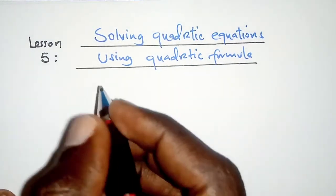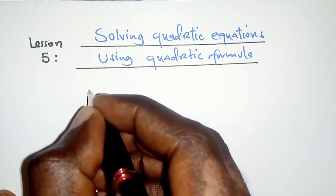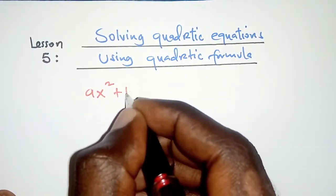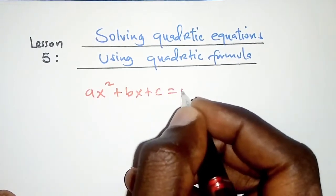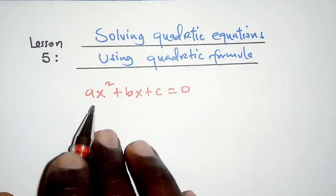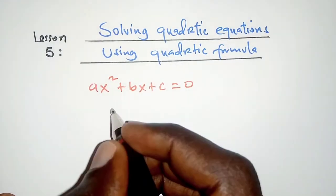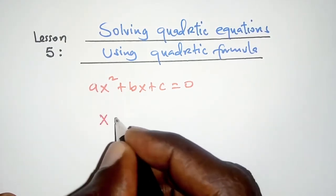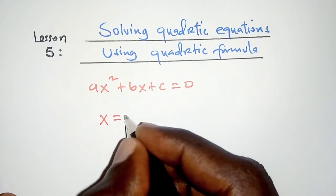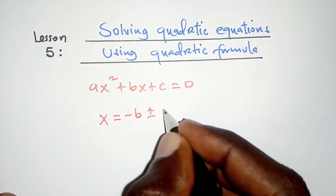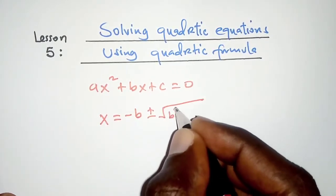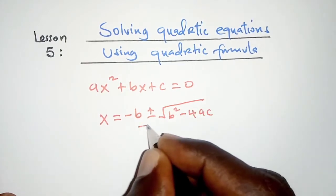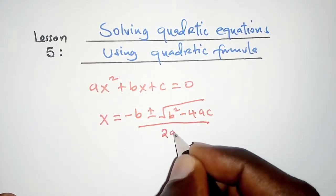First of all, given a quadratic equation ax squared plus bx plus c is equal to zero, we can solve this straight away by substituting in the quadratic formula which states x is equal to negative b plus or minus the square root of b squared minus 4ac all over 2 times a.